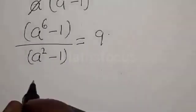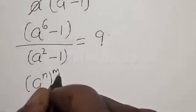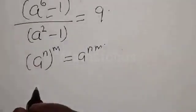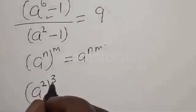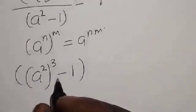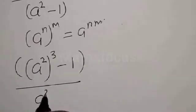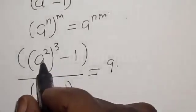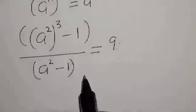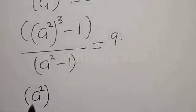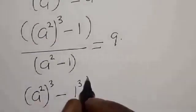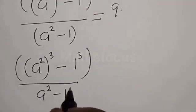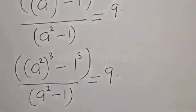Remember, if you have a raised to power n raised to power m, that is the same as a raised to power n times m. So let's express this: we have a squared raised to power 3, minus 1, divided by a squared minus 1, is equal to 9.